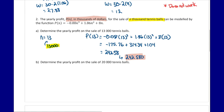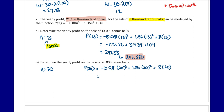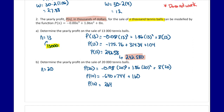For part b, n equals 20 for 20,000 tennis balls. So p(20) equals negative 0.08 times 20 cubed plus 1.86 times 20 squared plus 8 times 20. That gives negative 640 plus 744 plus 160, which equals 264. Again, p of n is in thousands of dollars, so the profit is 264,000 dollars.